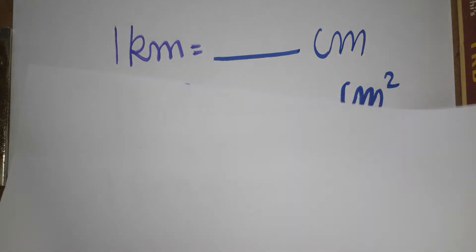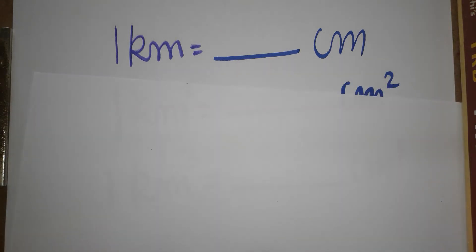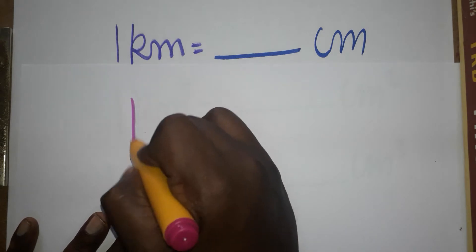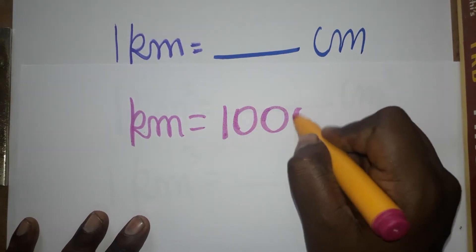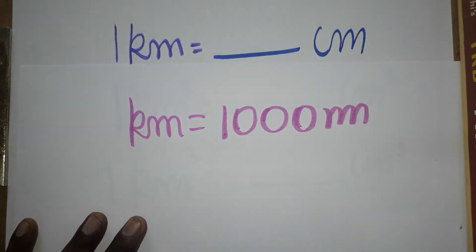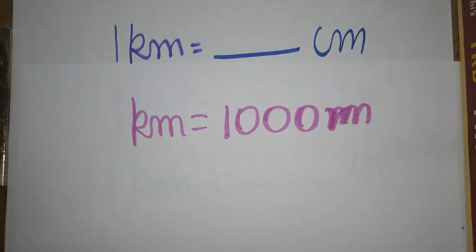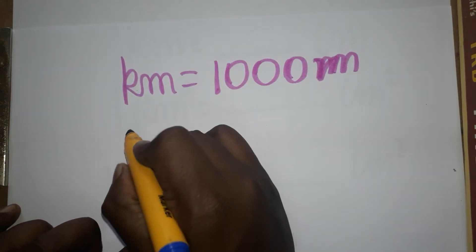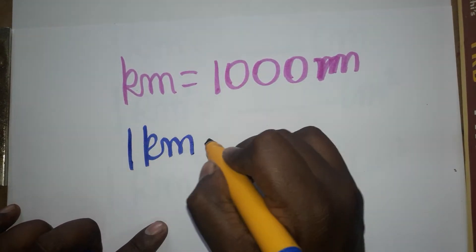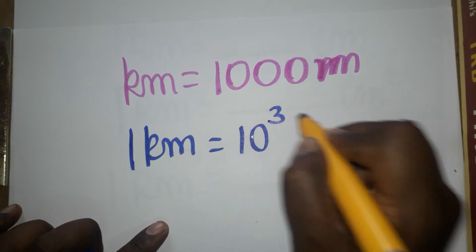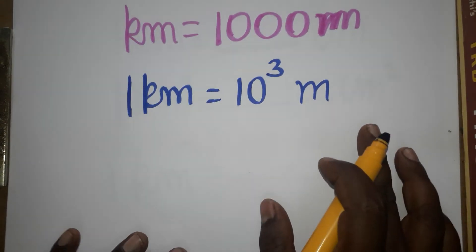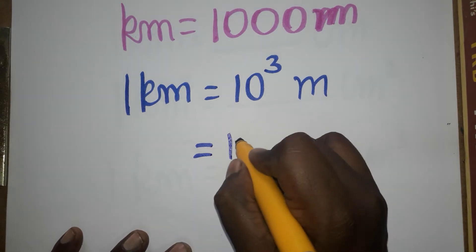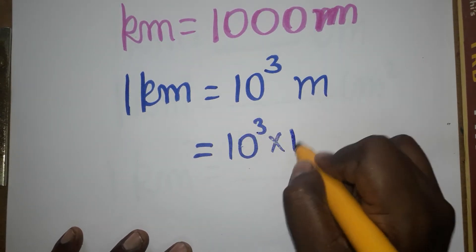First, we'll see how to convert from kilometer to centimeter. One kilometer is a thousand meters — we can write that as 10 power 3 meters. And one meter is 100 centimeters, which is 10 power 2 centimeters.